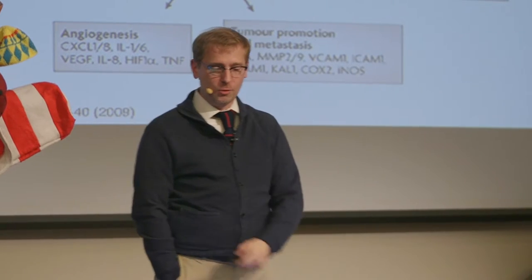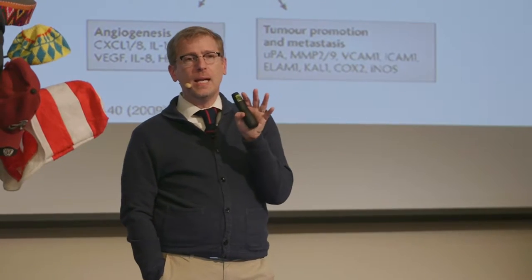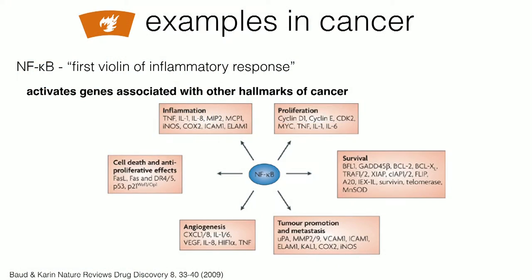One key gene in the inflammatory process is NF-kappa B — sometimes called the first violin of inflammatory responses, meaning it leads and others follow. It is one of the early molecules activated in inflammation. Each pink or red box on the slide represents a different hallmark of cancer and a set of genes within that hallmark that are activated specifically by NF-kappa B. It is like the master regulator of the inflammatory process.